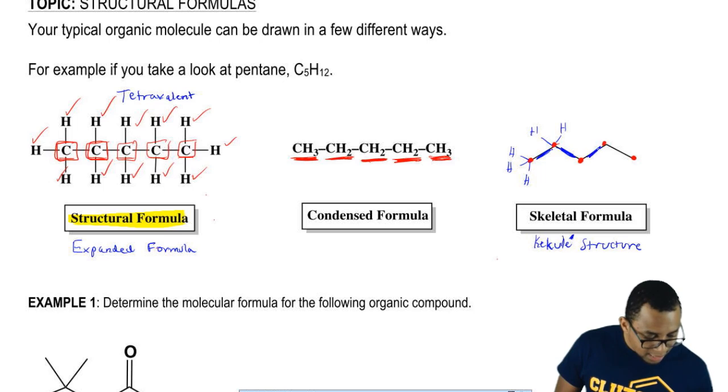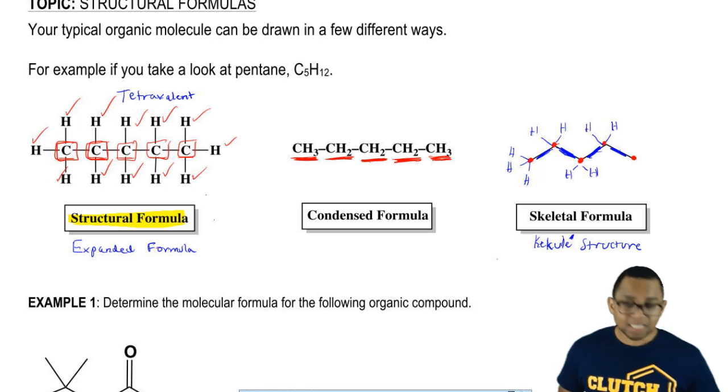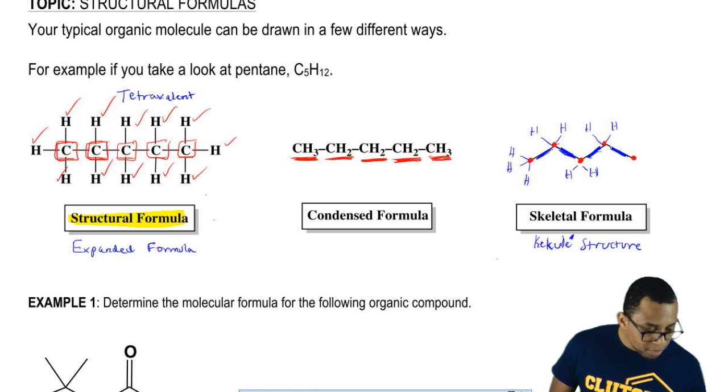Same thing with this carbon. We see it's connected to one, two carbons, so it must have two hydrogens we don't see in order to get to four. Here this carbon is making one, two bonds, so it needs two more hydrogens to get to four. And then finally, the end carbon, we see it making one bond here, so it must have three hydrogens we don't see.